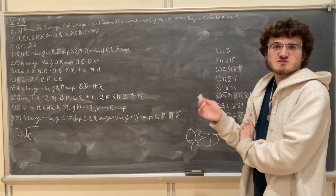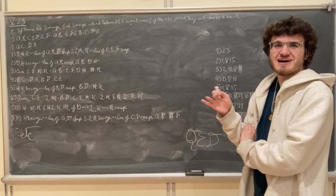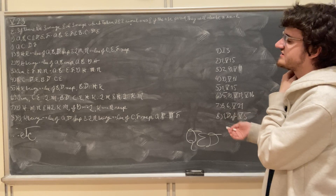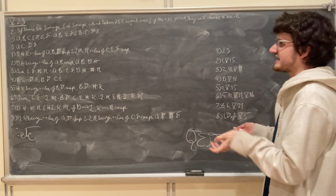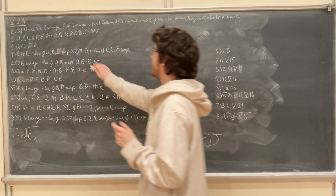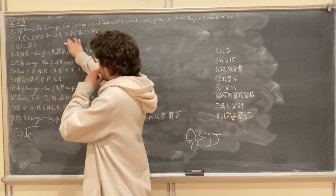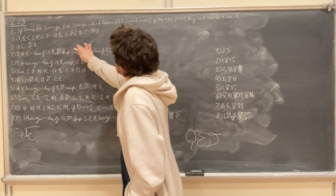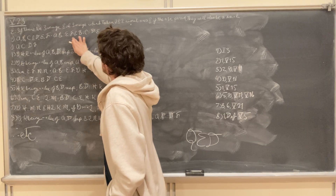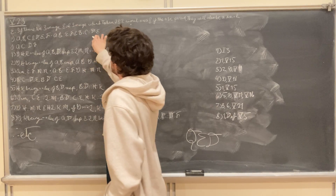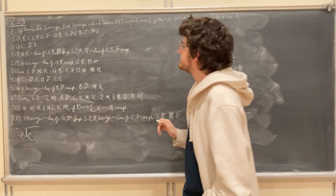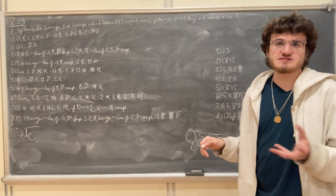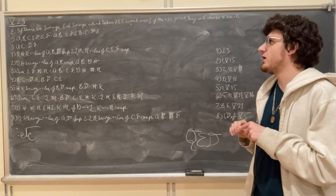So unlike the previous proposition where the proportion was unperturbed, the proportion here is perturbed, and what that means is that instead of E being in the middle, it's going to be on the extremities. But nonetheless, what we're going to prove is that A is to C just as D is to F, ex aequale.